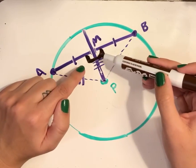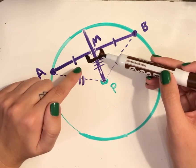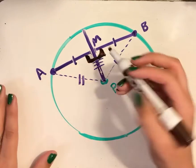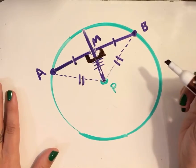They're congruent, so they have the same measure, and those measures have to add up to 180. So that makes both of these angles right angles.